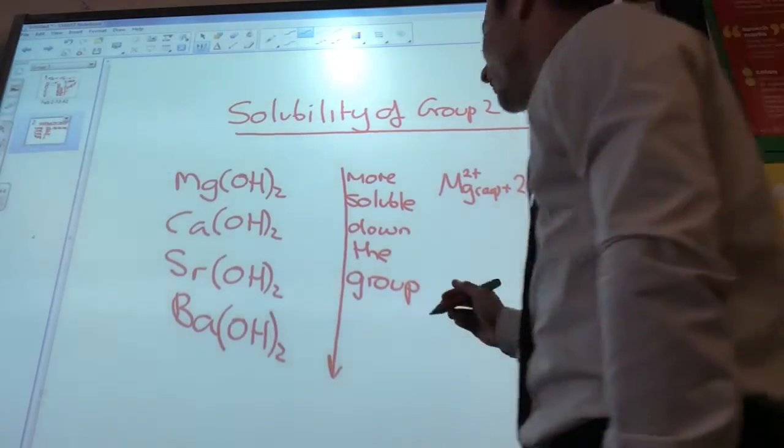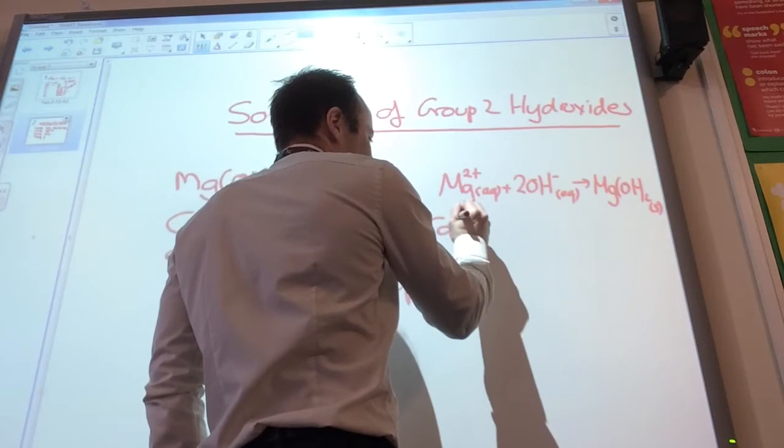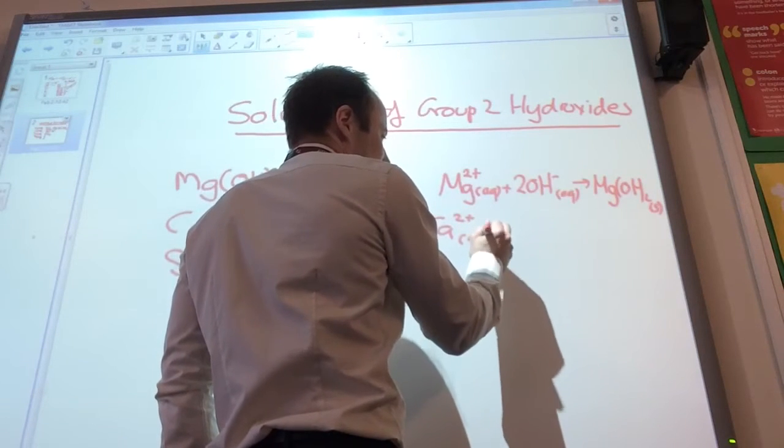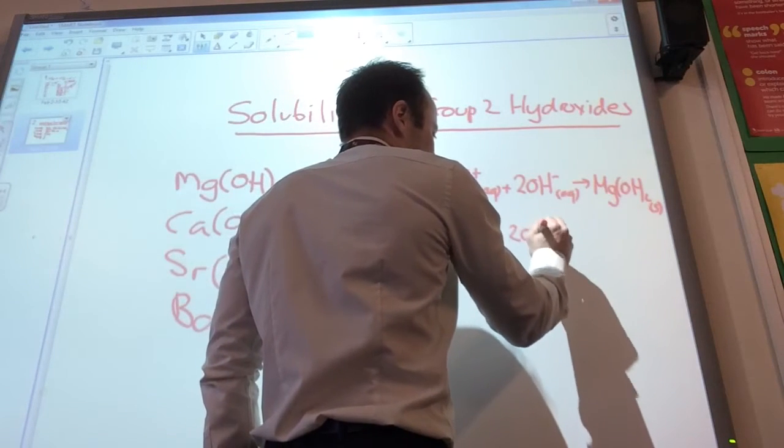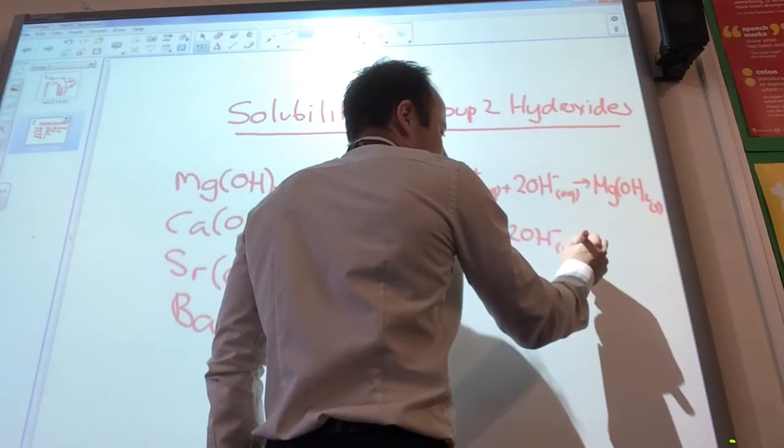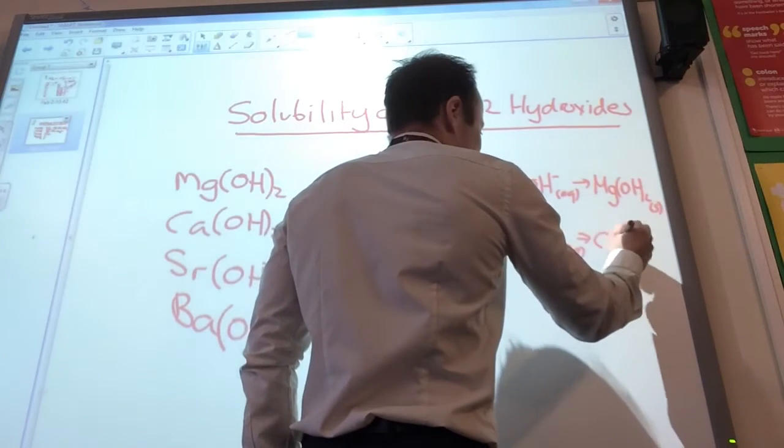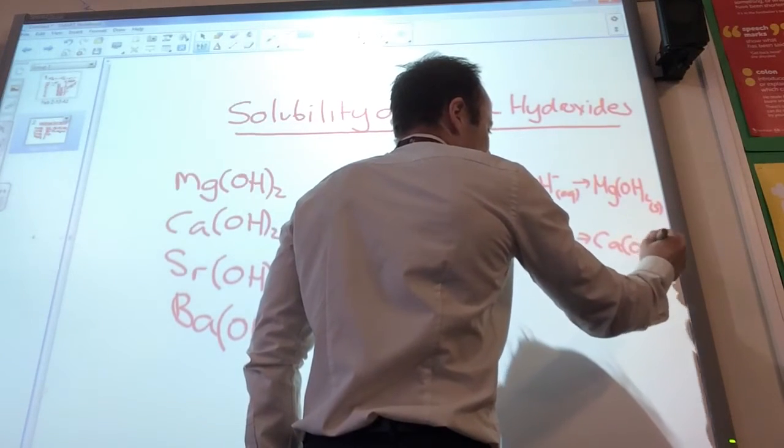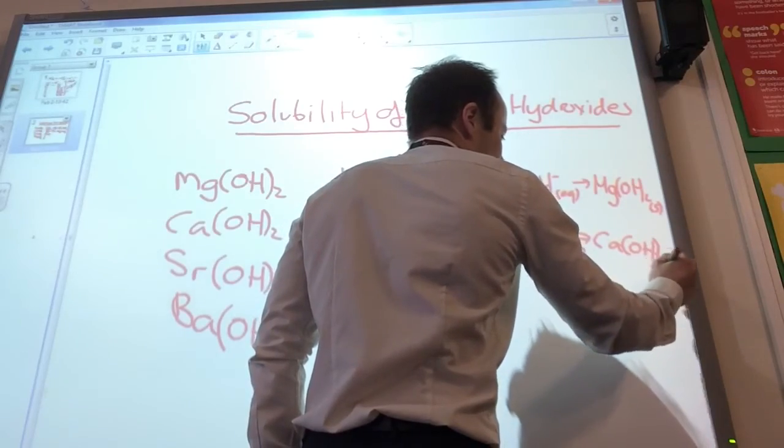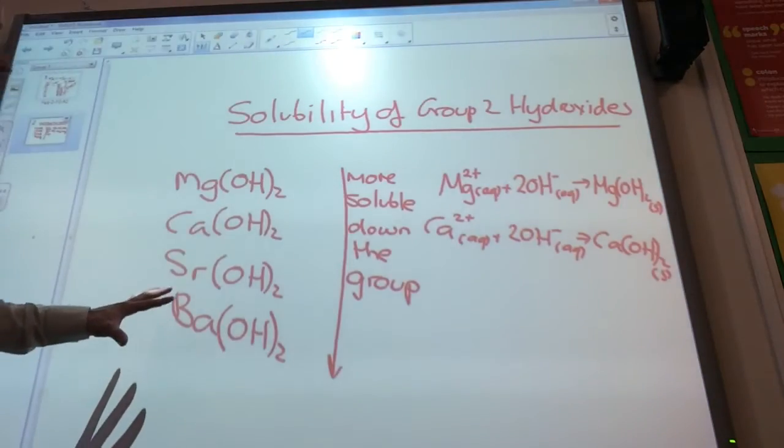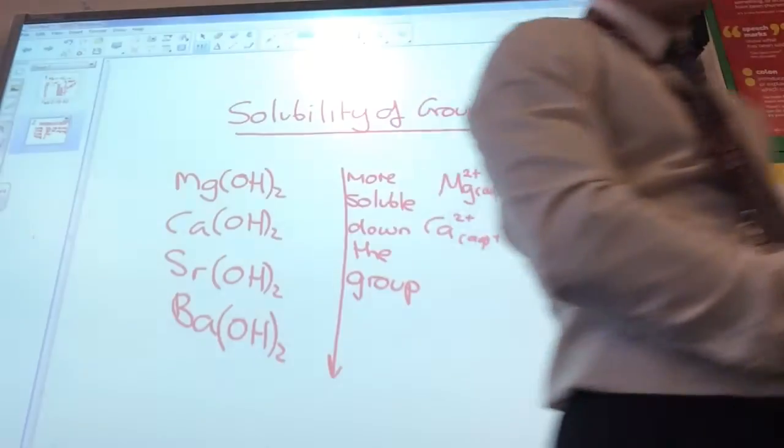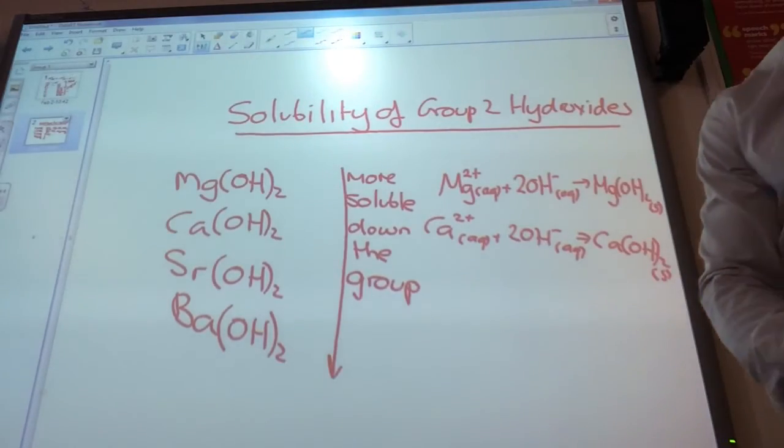The same would go for calcium as well. Calcium 2+ aqueous plus 2 hydroxide ions. Calcium 2+ is going to give me calcium hydroxide solid, like so. These two are soluble, so I wouldn't see a precipitate at all.